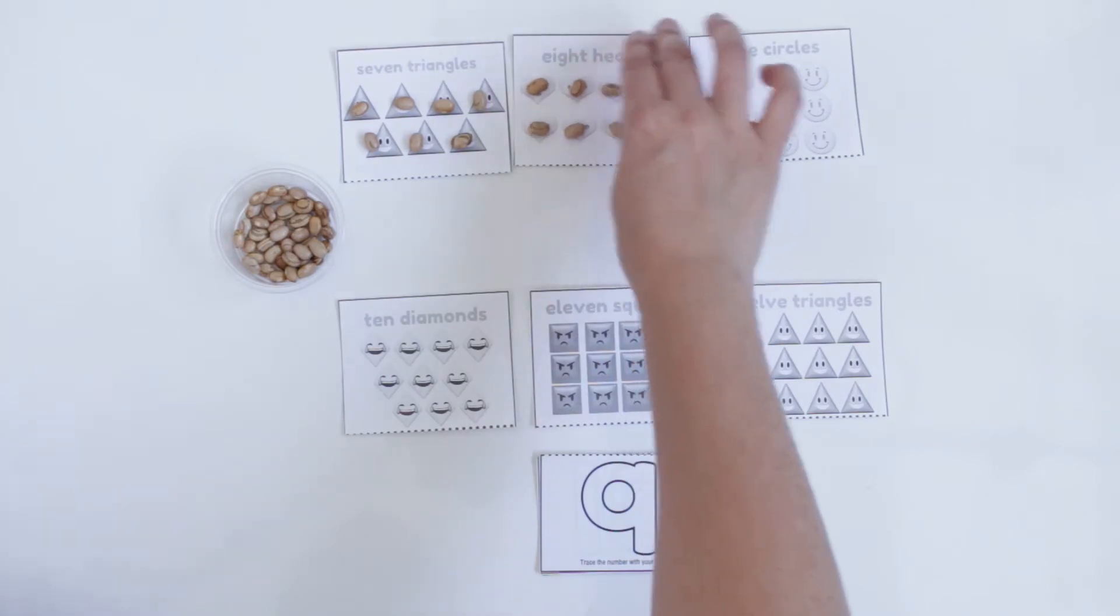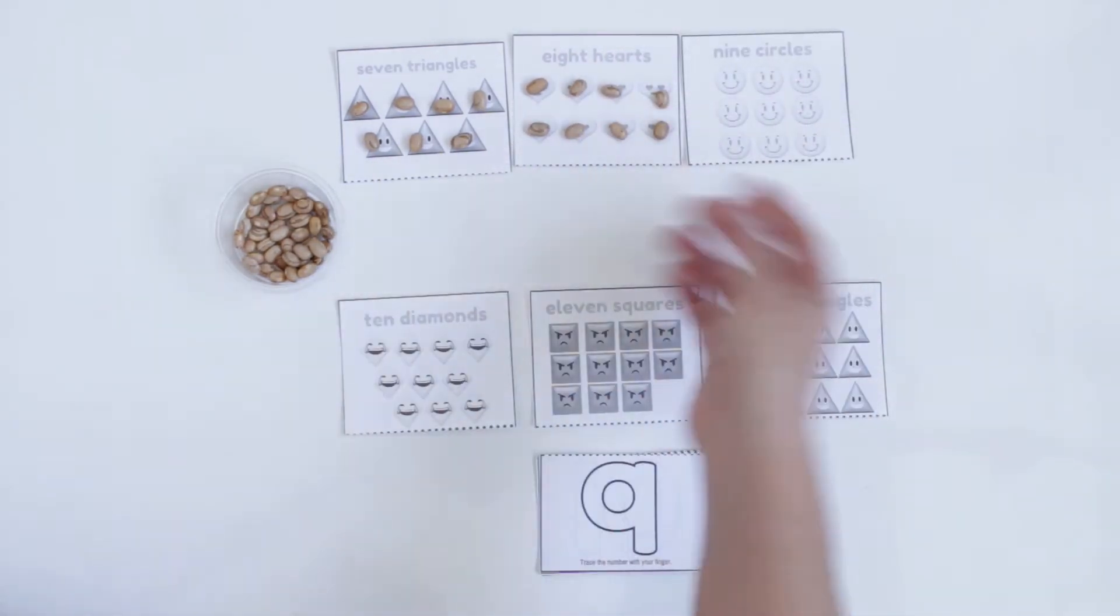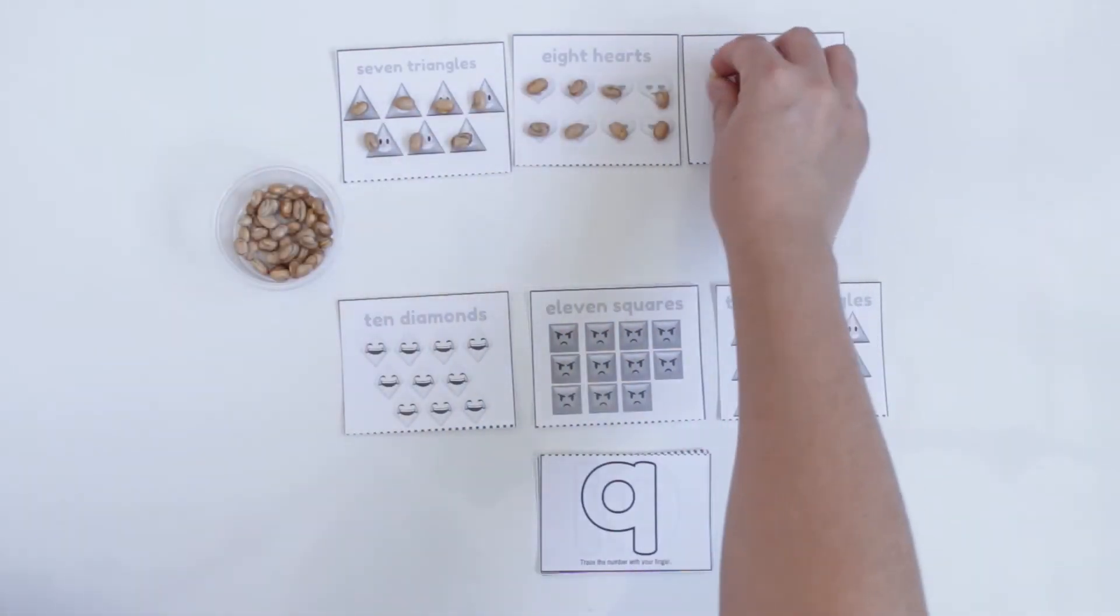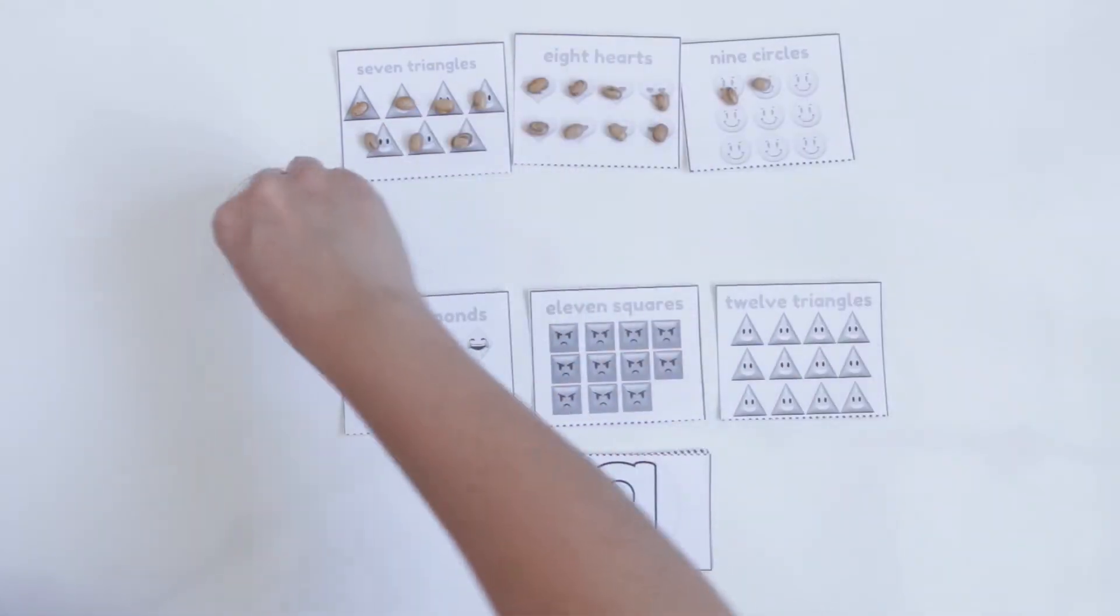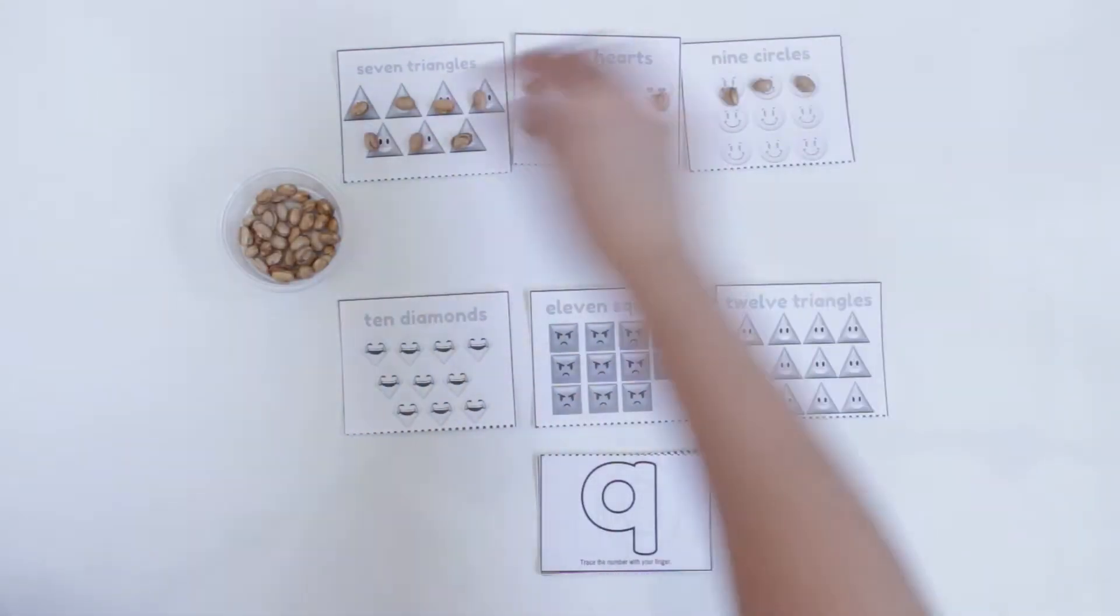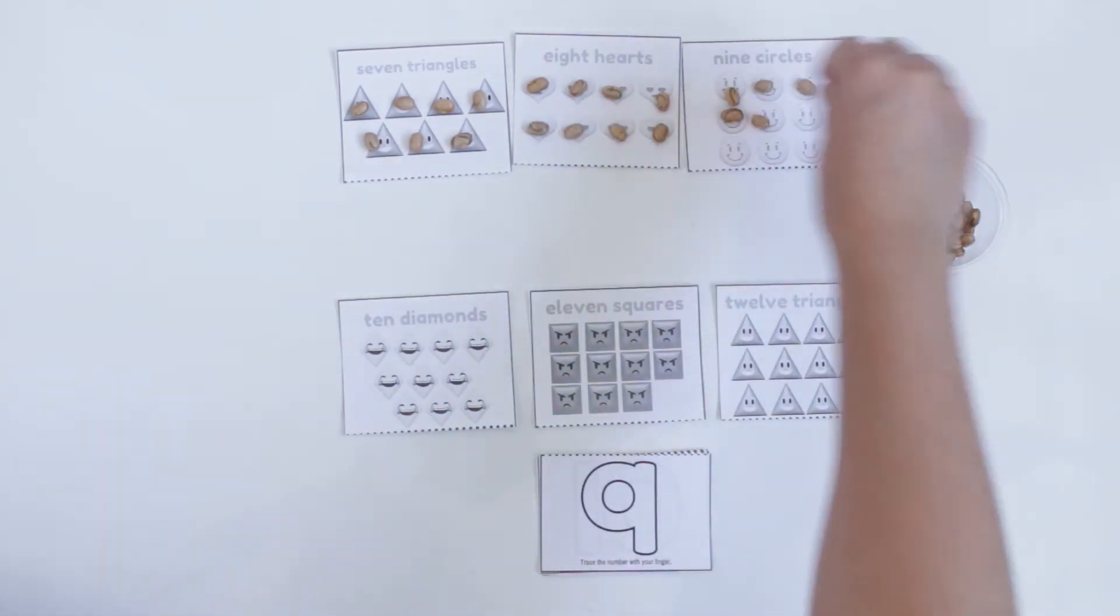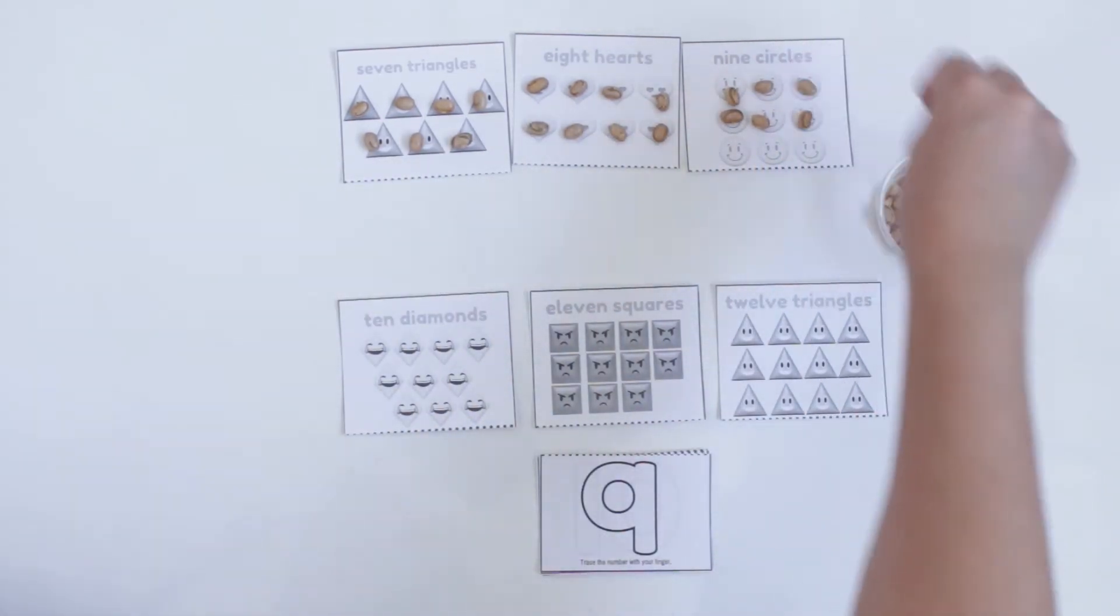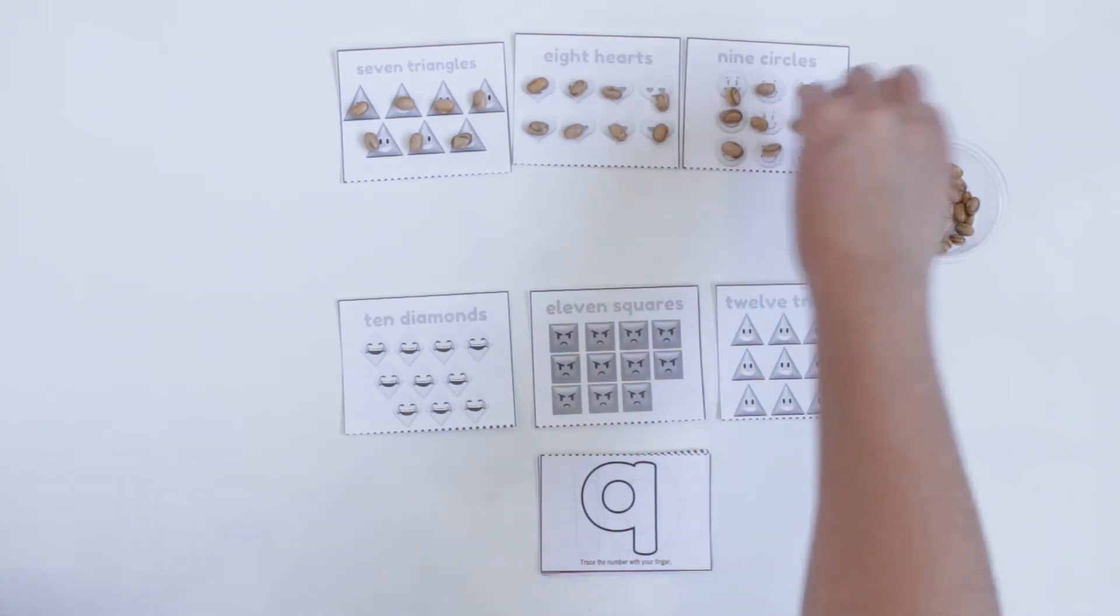And then keep going for all of them. So here I have circles: 1, 2, 3, 4, 5, 6, 7, 8, 9 circles.